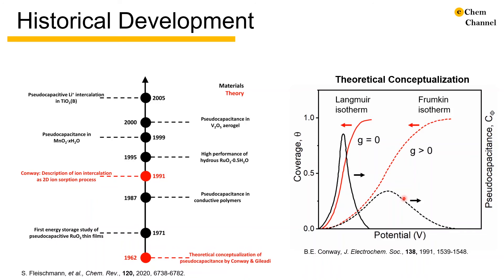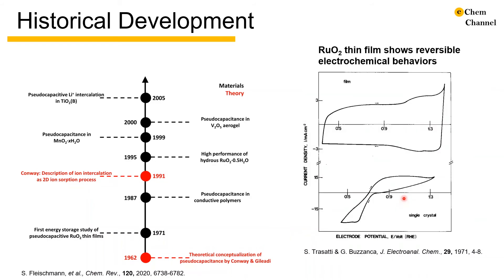In the early 1960s, Conway and Gileady developed the theoretical conceptualization of adsorption pseudocapacitance using Langmuir and Frumkin isotherms. As you may see, the capacitance here takes the form of peaks, which agree well with the cyclic voltammogram for adsorption pseudocapacitance shown in the last slide. Note that while the paper referred to here is from 1991, it is just a nicer presentation of the concept developed in the 1960s.